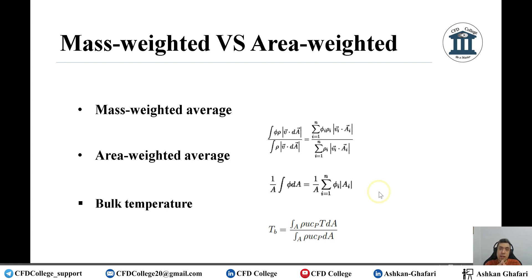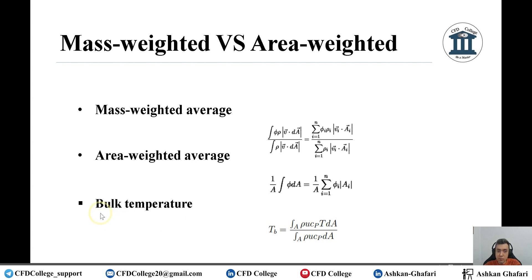If you want to calculate the temperature of a wall — for example the wall of a tube, a pipe, a house, or a turbine blade — you need to use area weighted average of temperature at that wall. But if you want to calculate the bulk temperature of the fluid at the outlet, inlet, or any cross-section or plane in your CFD domain, you should use mass weighted average. Look at the third formula on this slide, which is the definition of bulk temperature, which you can find in any heat transfer textbook.